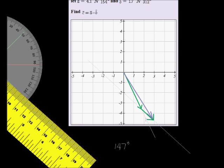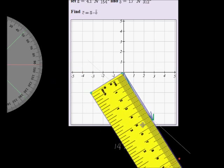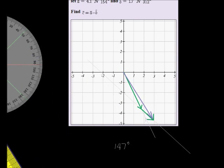The size or the magnitude would be, it seems like about 5.7 itself. So the magnitude would be 5.7 Newtons, while the bearing is 147 degrees.